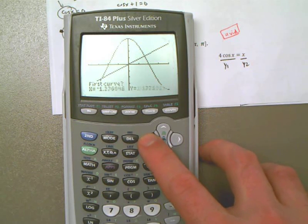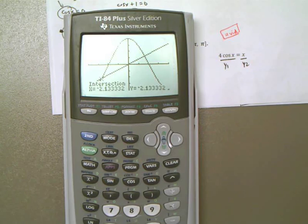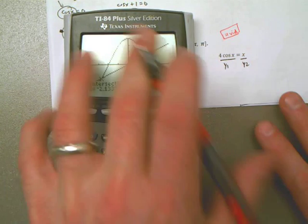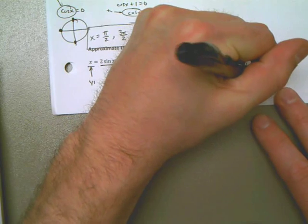So to approximate those, I'm going to go second calc intersect. I'm going to scroll to the left here until I get to around the intersection point. Enter. Negative 2.133 is the first answer.